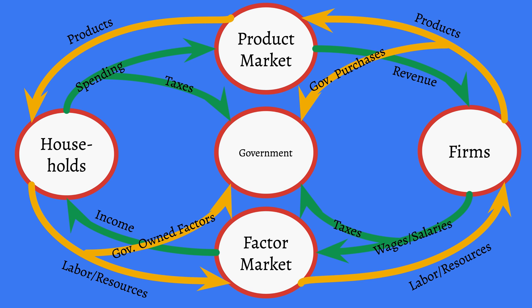So here we have the government taking taxes and taking stuff. It seems like the government is just taking and taking and giving nothing back, but it's not how it is. The government gives what we call expenditures back to the households. Think about me, a public school teacher — I work at a government school, I sell my labor to the government, but I get a paycheck for that labor, and that counts as expenditures. In addition, the government provides all kinds of services — military protection, roadways to drive on, and if I retire, I'll get social security payments. These all count as expenditures that households are the beneficiaries of.